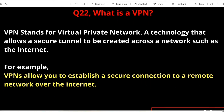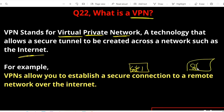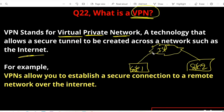Question number two: what is VPN? VPN stands for Virtual Private Network — a technology that allows a secure network to be created across a public network such as the internet. Suppose we have two sites, site one and site two. For connectivity between these two sites we take connectivity from an ISP, but the service provider network is not safe — there will be hackers and attackers on this public network. With the help of VPN we can create one virtual private network.